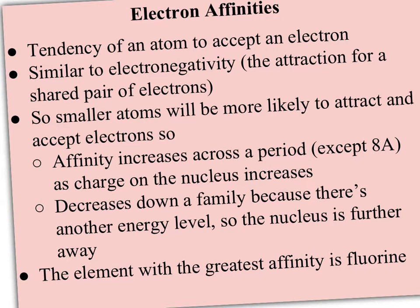So far we've been treating covalent bonds as if they're just single, double, or triple covalent bonds, and we've been assuming that electrons get shared equally. Well, that's not quite true. Electron affinity is very similar to electronegativity. Affinity, if you have an affinity for something, it's a likeness or attraction. So electron affinity is the tendency of an atom to accept an electron, and electronegativity is the attraction for that shared pair of electrons once it's accepted. If an atom has a high electron affinity, it's likely to accept an electron, and then the electronegativity is what holds that pair of electrons together — just a technical difference between attracting the electron and then holding on to the pair of electrons.